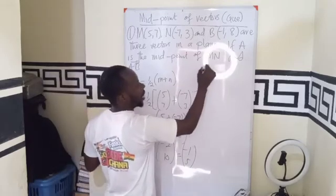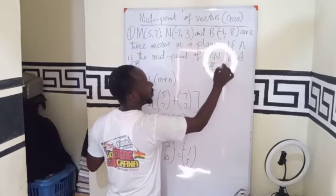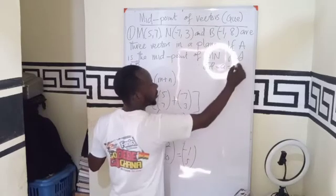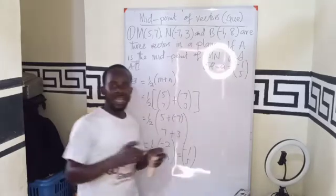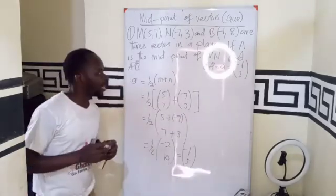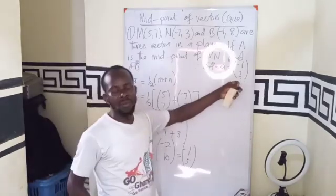So therefore, our A, the position vector A is (-1, 5). So now we know the position vector of A.